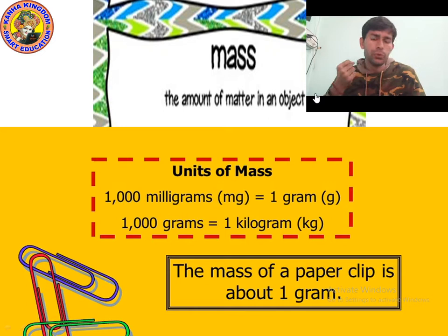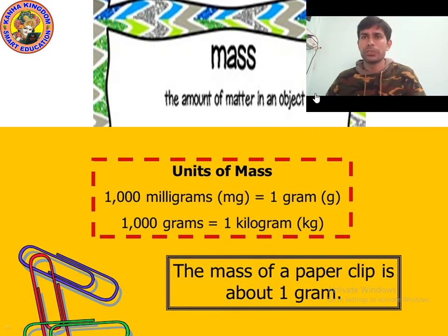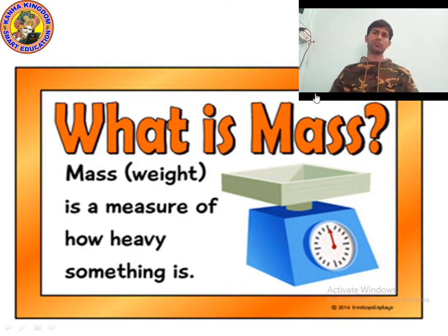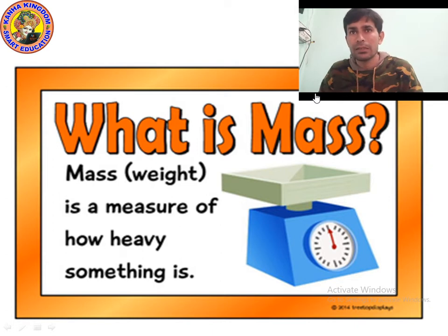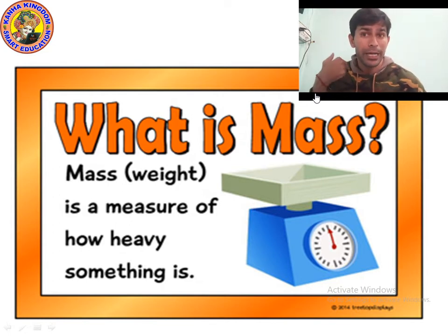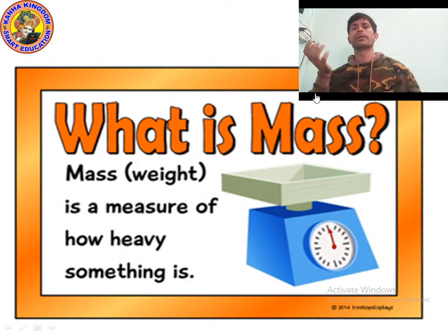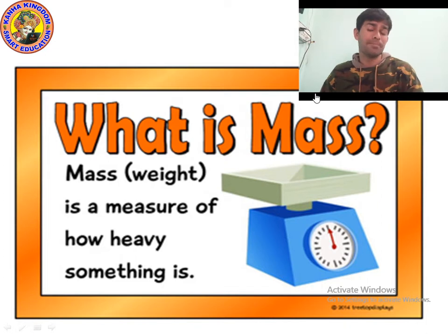Mass is the amount of matter in an object. Another definition: mass is a measure of how heavy or light an object is. If I am heavy, I have more mass. If I am light, I have less mass. For example, if my weight is 50 kilograms, I have more mass; if it is 30 kilograms, I have less mass.